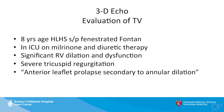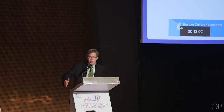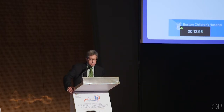This was an 8-year-old male with hypoplastic left heart syndrome who had had a fenestrated Fontan. He was in an ICU on milrinone and diuretic therapy, noted to have significant RV dilation and significant dysfunction, and severe tricuspid valve regurgitation. His outside diagnosis had been anterior leaflet prolapse secondary to annular dilation — a case similar to many we all take care of.